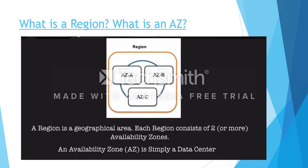This slide talks about what a region and an availability zone are. A region is a geographical area; each region consists of two or more availability zones. An availability zone is simply a data center. For example, India can be considered a region where AWS has chosen to create multiple data centers — currently one in Mumbai with plans for another in Bangalore. These data centers are called availability zones, connected by fiber cables, and resources replicated across them synchronously replicate on very high bandwidth.